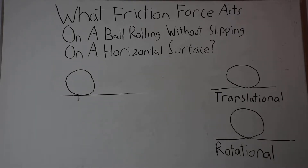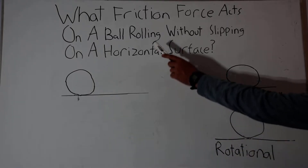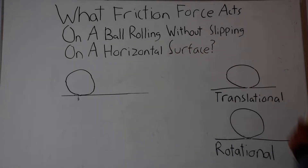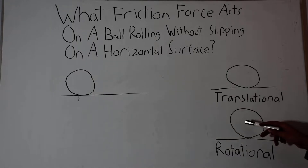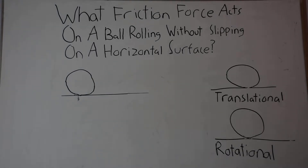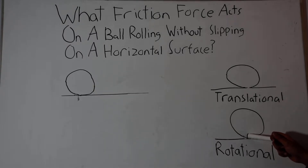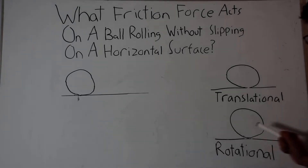Before we jump into this question, we need to understand what rolling without slipping really means. As the name implies, the ball does not slip relative to the surface. What that means is that the bottom of the ball has zero velocity relative to the surface, or it does not move.